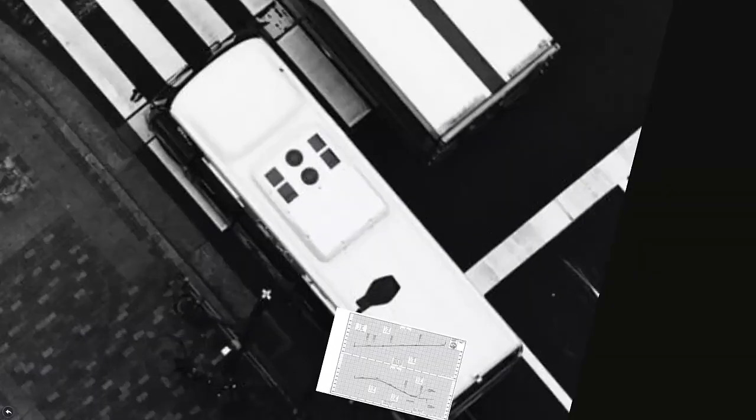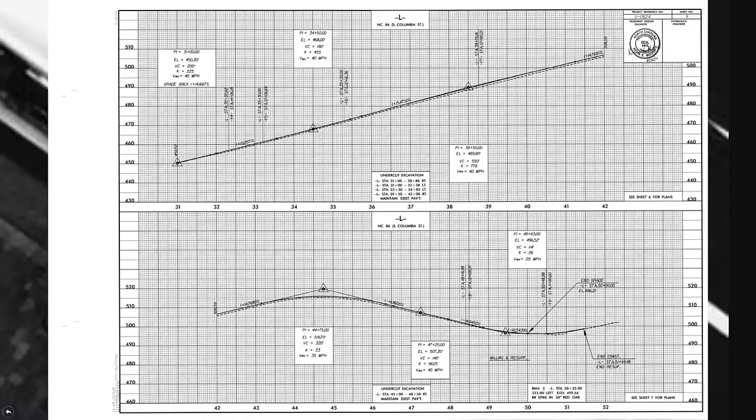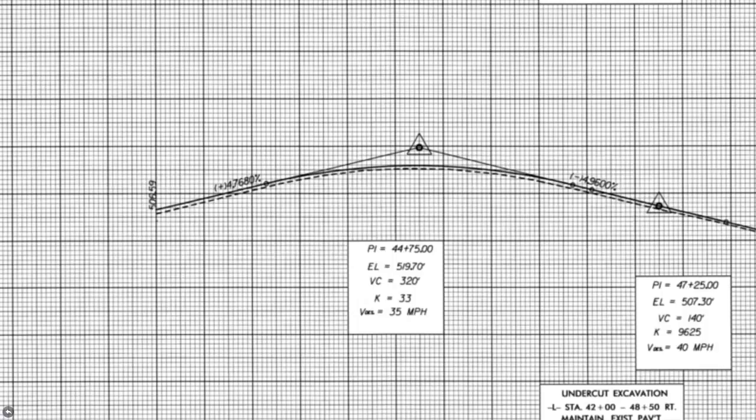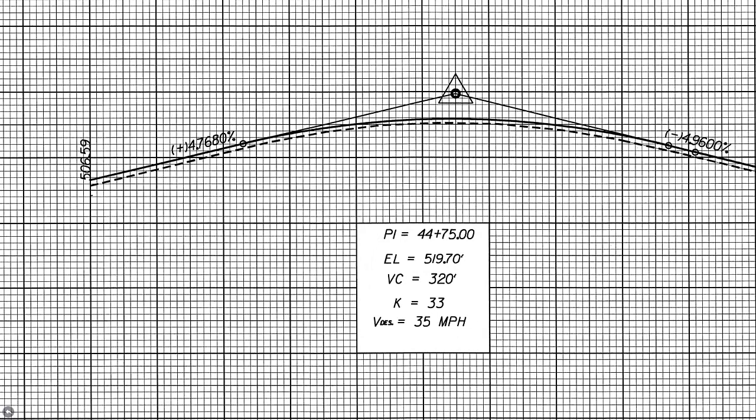That covers our important horizontal curve information. We should also have a sheet with vertical curve information. This example is again along the L line. Vertical curves are set up on an axis: the x-axis shows distance in stations, and the y-axis shows elevations. For one curve in particular, the PI is at station 44 plus 75 with an elevation of 519.7 feet. The vertical curve has a length of 320 feet and a K value — the rate of vertical curvature — of 33.